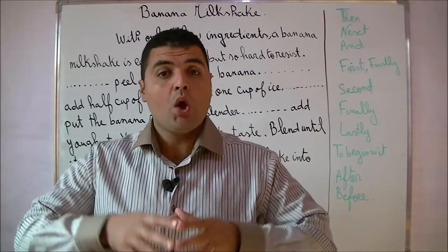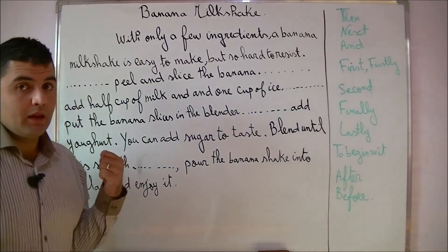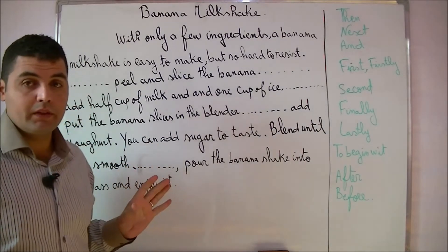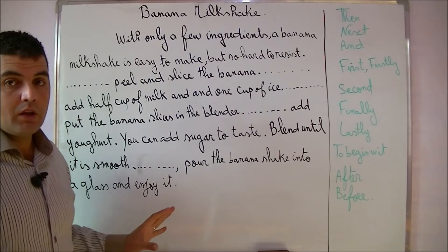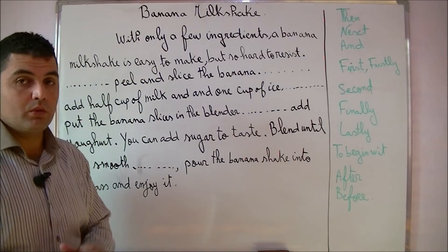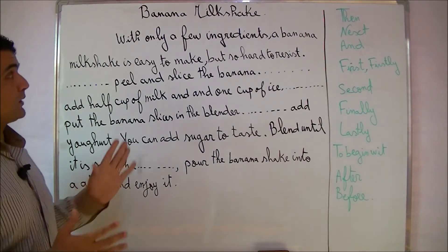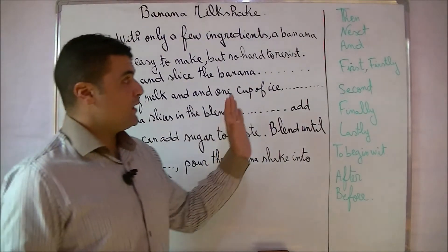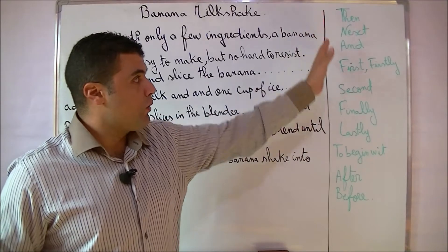After talking about the ingredients and the process to make a banana milkshake, we are going to work on this paragraph — it is called a process analysis paragraph. In a process analysis paragraph you are writing about how to make something or how to do something. Here we are writing about how to make a banana milkshake.